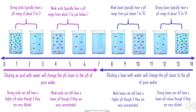Water self-ionizes, producing its own small concentrations of hydronium and hydroxide ions naturally. When you continue diluting an acid or base, the ion concentrations will eventually match the natural concentrations that water produces on its own, and you won't be able to change the pH beyond that point. For example, you could never dilute a strong acid to have a pH greater than 7 — you would have to add a base to push the pH past 7. Similarly, you could never dilute a strong base to a pH less than 7; you would have to add an acid to achieve that.